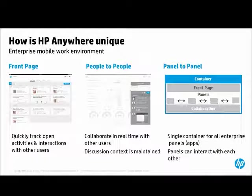HP Anywhere is unique through its front page concept, which highlights all activity across multiple mobile app actions, and through people-to-people collaboration. For example, a user submits an expense to their manager, the manager comments that it's too high, the user responds explaining the conference dinner, and the manager approves the expense — all facilitated through embedded collaboration within the platform.